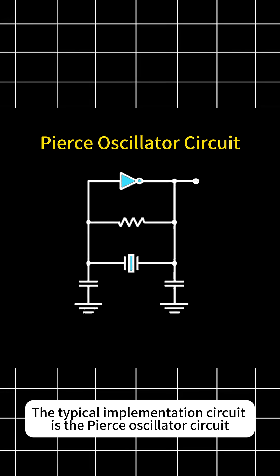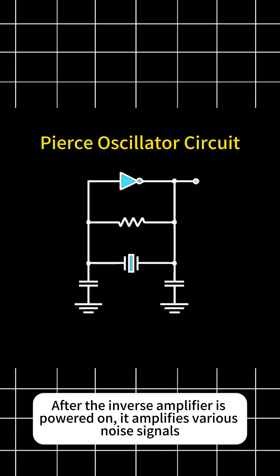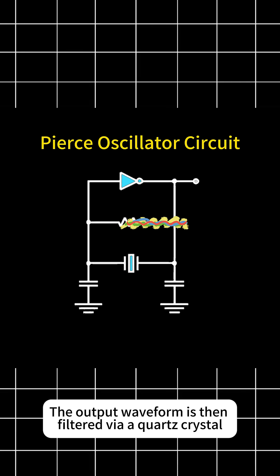The typical implementation circuit is the Pierce oscillator circuit. In this circuit, after the inverse amplifier is powered on, it amplifies various noise signals. The output waveform is then filtered via a quartz crystal.